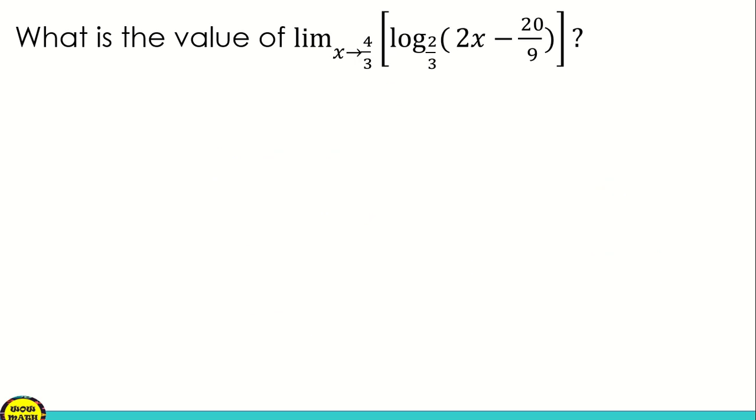We have the limit of logarithm base 2/3 of 2x minus 20/9 as x approaches 4/3. Again, this equals f of 4/3, then substitute. So we have logarithm of 2 times 4/3 minus 20/9 with base 2/3.